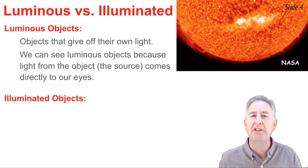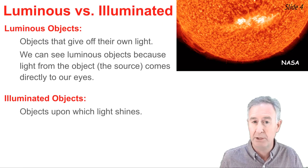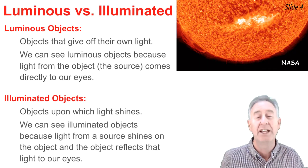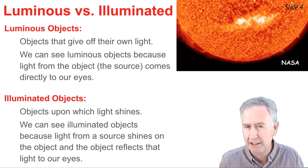We contrast that with another type of object called an illuminated object. An illuminated object is an object upon which light shines, and we see illuminated objects because light shining on the object bounces off of it and comes to our eye. It's not because it creates its own light.